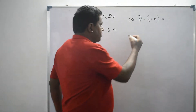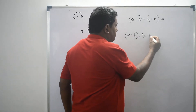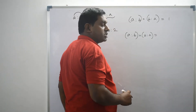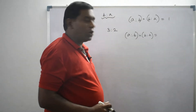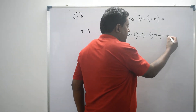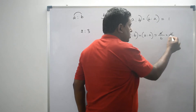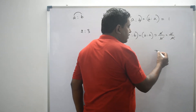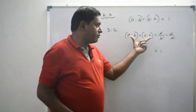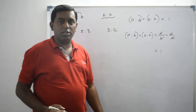Let's verify. A is to B multiplied by B is to A. To multiply the two ratios, we can write each ratio as a fraction. Then we get A by B into B by A. This A and A can be cancelled out, and this B and B can be cancelled out. Finally we get 1. So the product of these two inverse ratios is equal to 1.